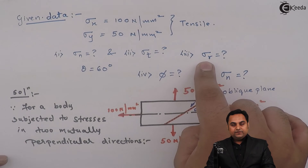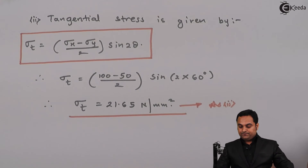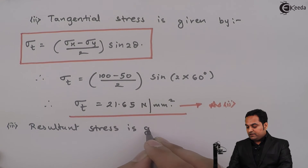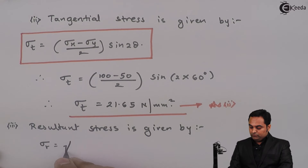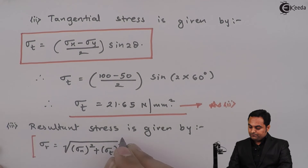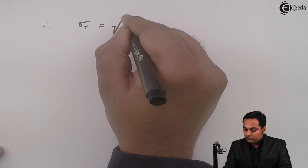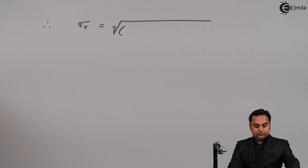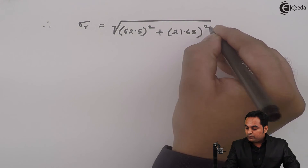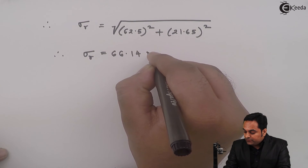After finding the normal and tangential stresses, we calculate the resultant stress. The formula is: Sigma R = √(Sigma N² + Sigma T²). Therefore Sigma R = √(62.5² + 21.65²), and the resultant stress comes out to be 66.14 Newton per mm square. This is the third answer.